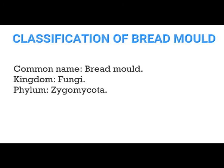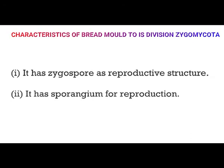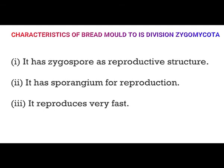The common name is breadmold. The kingdom is Fungi. The phylum or division is Zygomycota. Now, what are the characteristics of this division? Breadmold belongs to division Zygomycota for the following reasons: first, it has the sporangium as a reproductive structure.